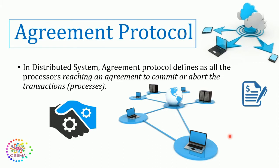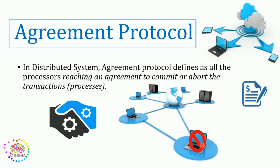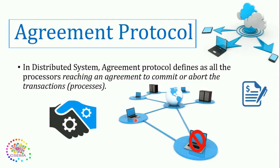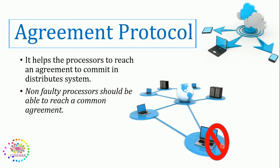So in distributed systems, we know that multiple systems work as a single system. In case what if one system gets failed or it has any fault — then how will these systems' data managers decide? We need to commit or abort the transactions. In this case, Agreement Protocol helps. Agreement Protocol defines all the processors reaching an agreement to commit or abort any transaction or process that is going on. The non-faulty processors must reach a common goal.